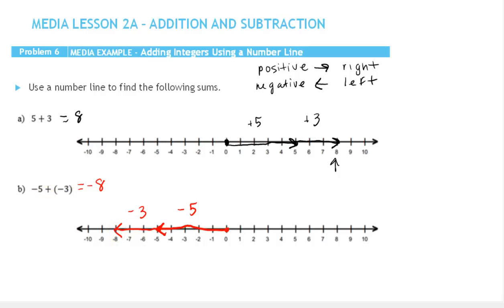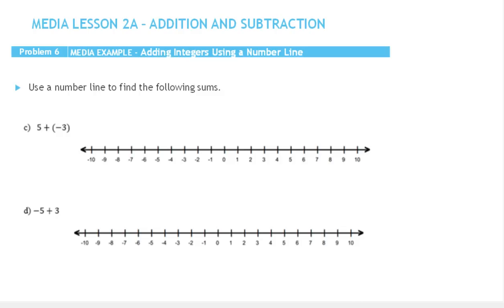Let's look at the other two types we learned with the chip model — this is when we have opposite signs. We're going to go to the right for positive numbers and go to the left for negative numbers. So here we're starting with a positive 5. I'm going to start at 0 and move 5 to the right, which takes us to here. This is plus 5.